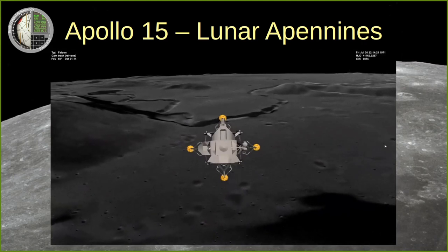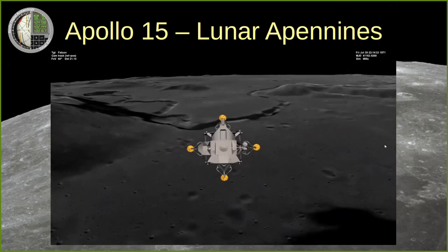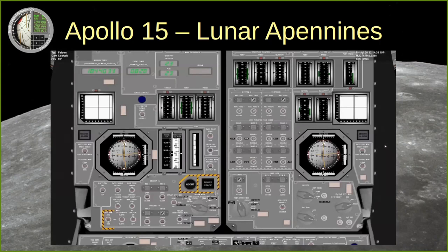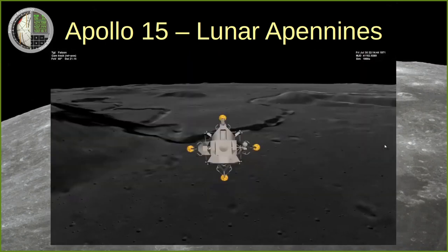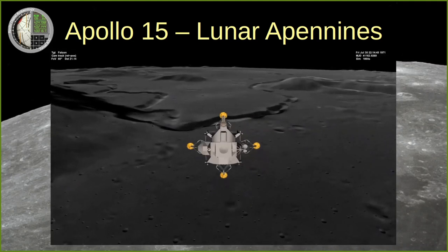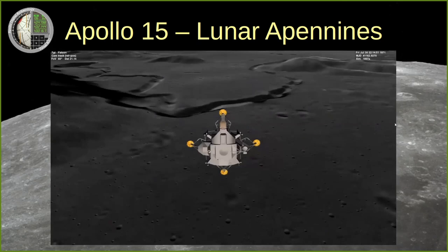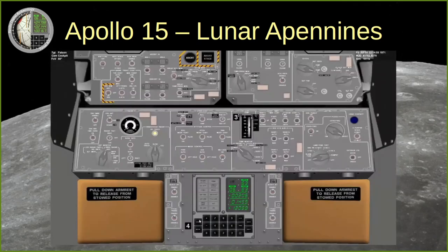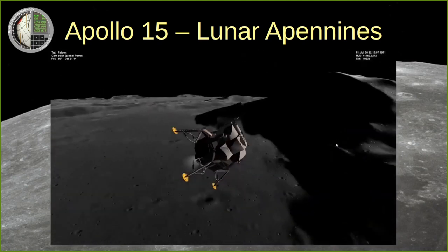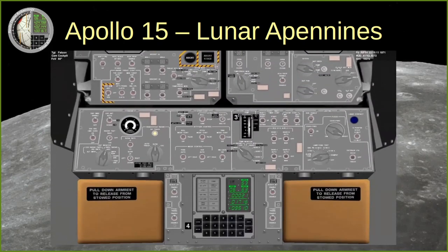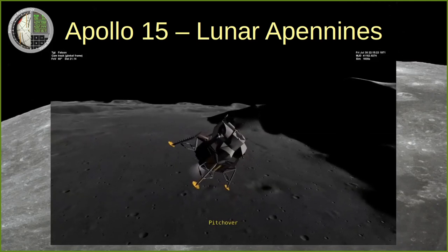For this mission, the LEM's AGC runs software known as Luminary 210, and specifically it's using the subprograms called P-63, P-64, and P-66. At the moment, P-63 — landing maneuver braking phase — is running. The simulation does have a human pilot, Nick, but it so happens that the AGC can handle this lunar landing automatically, so Nick is basically just observing and occasionally checking the DSKY at the bottom of the control panel. The P-63 program is now nearing its end, after which it will automatically transition to program P-64, landing maneuver approach phase, at which point the LEM will pitch over. And there's pitch over.